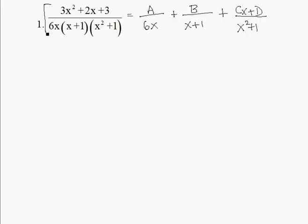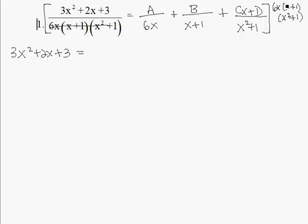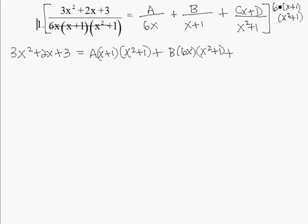We then multiply both sides by all three denominators: 6x, x plus 1, and x squared plus 1. When we multiply across, the denominators cancel. We're left with 3x squared plus 2x plus 3 on the left. On the right, multiplying A's term leaves x plus 1 and x squared plus 1; for B the x plus 1's cancel, leaving B times 6x times x squared plus 1; and for the last term the x squared plus 1's cancel, leaving Cx plus D times 6x times x plus 1.